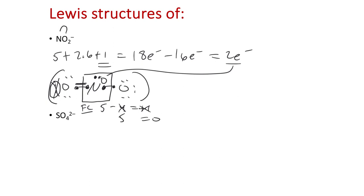The oxygens were negative. Each oxygen has seven electrons around it.